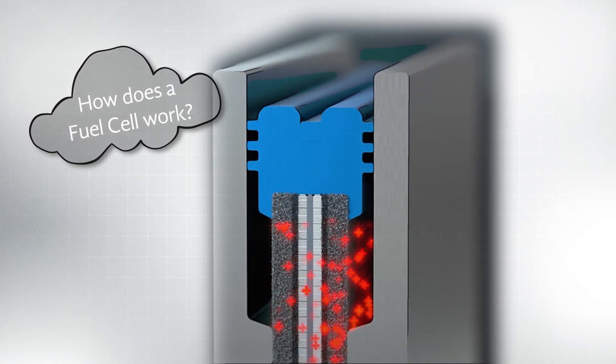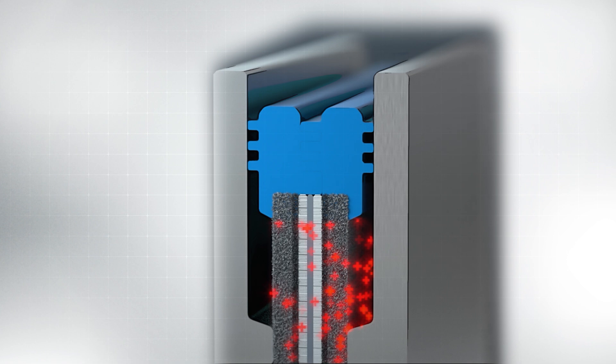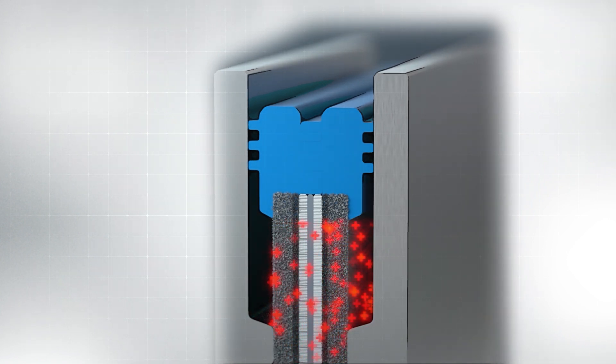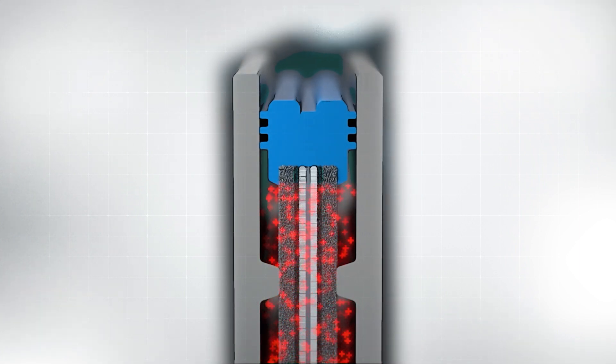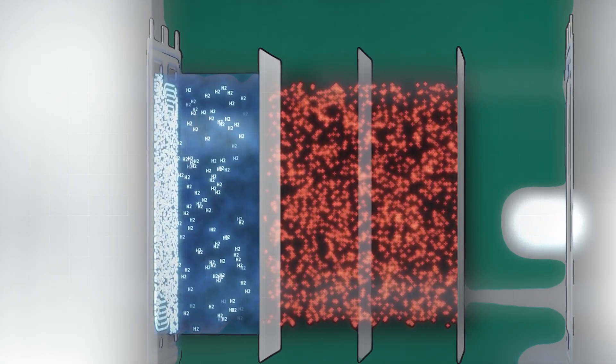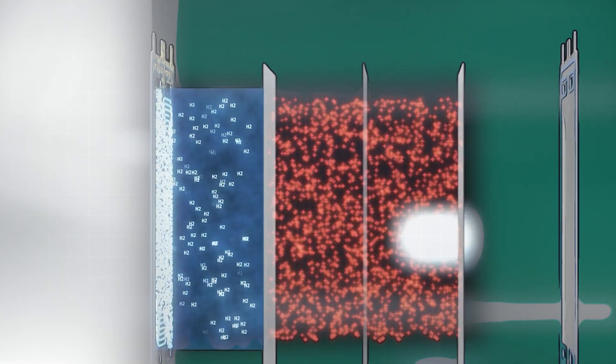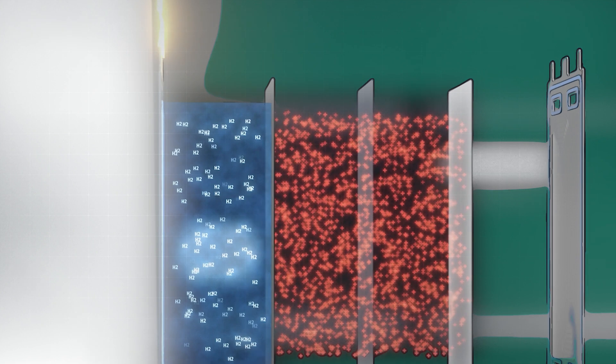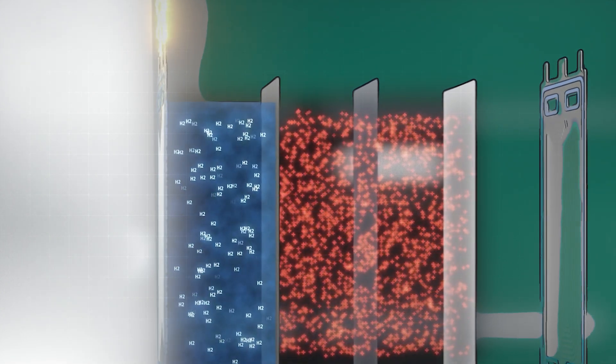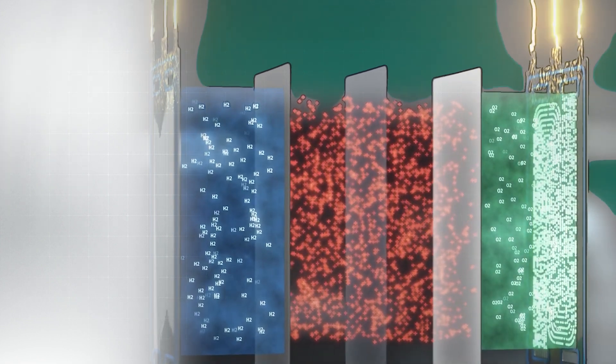A single fuel cell consists of a proton exchange membrane, PEM, which is coated with a catalytic surface. On its anode side, the protons of the hydrogen atoms can pass through the membrane. The electrons belonging to these protons are transported via an external electrical connection to the cathode side, where they combine with the oxygen to form water.